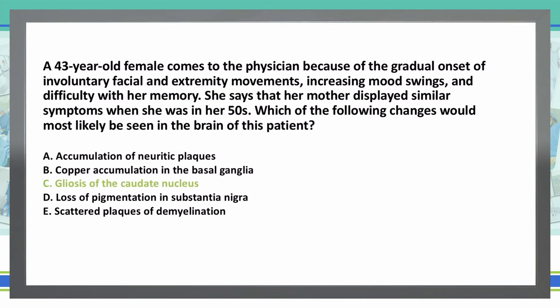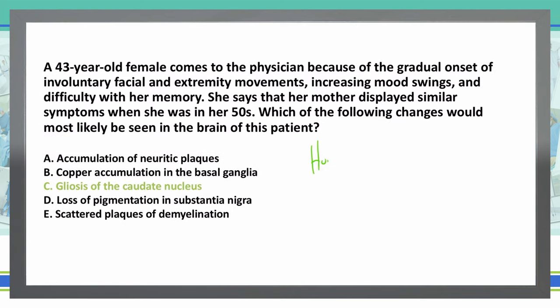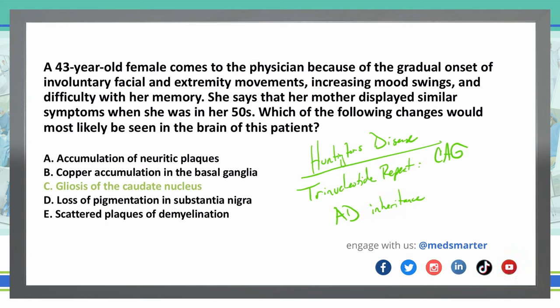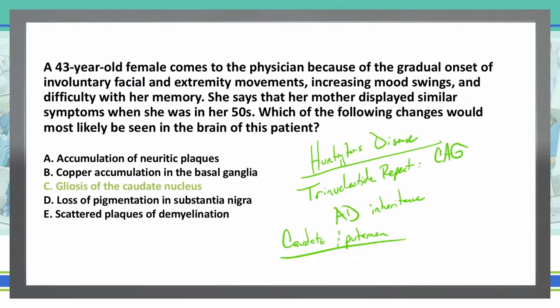That is the correct answer: gliosis of the caudate nucleus. This is Huntington's disease, with that trinucleotide repeat CAG. Our classic presentation is choreiform movements, dystonia, altered behavior, and dementia. This is an autosomal dominant inheritance, passing from mother to daughter and showing anticipation — arriving earlier through each successive generation. The caudate and the putamen are the affected areas in the brain, and specifically, gliosis is causing the hyperkinesia.